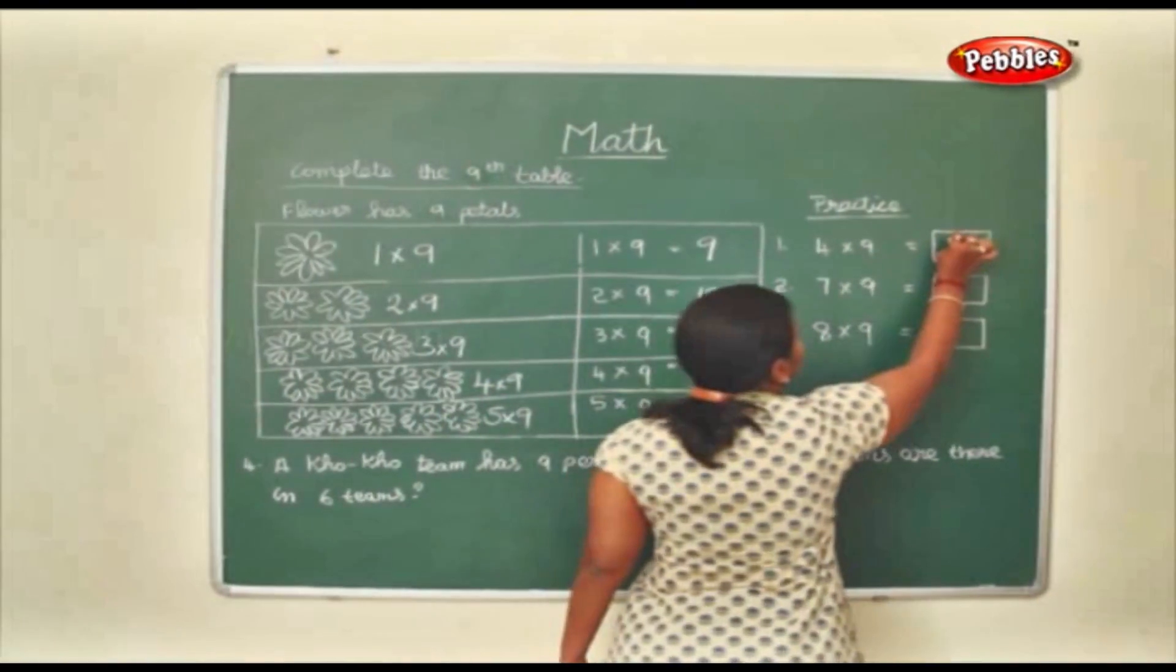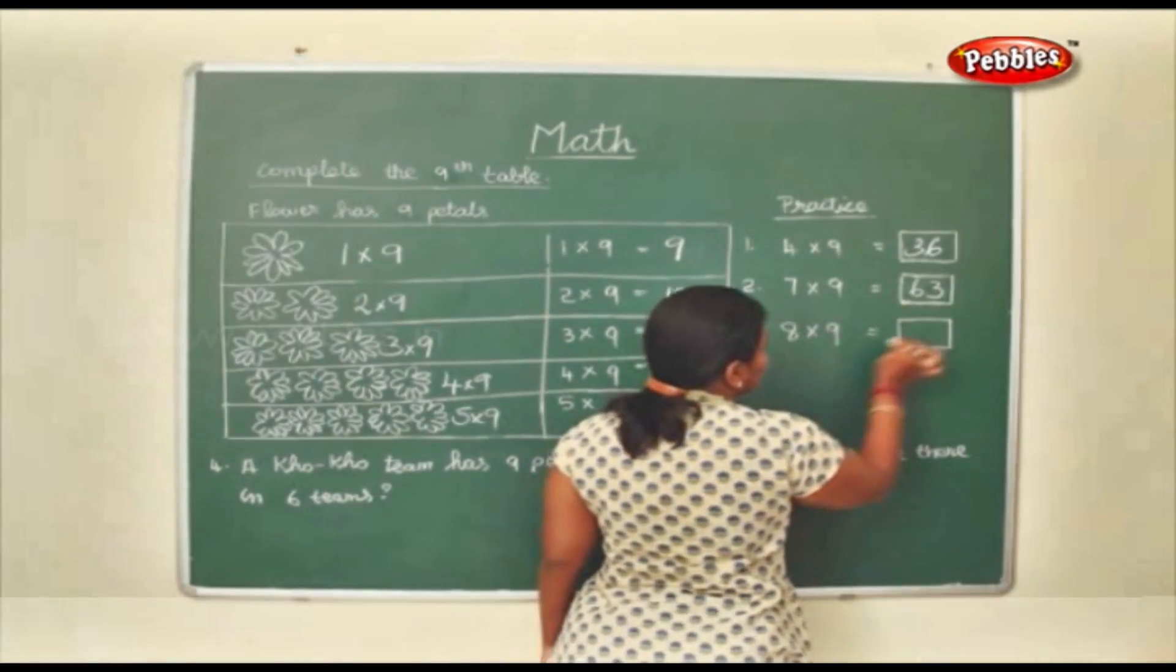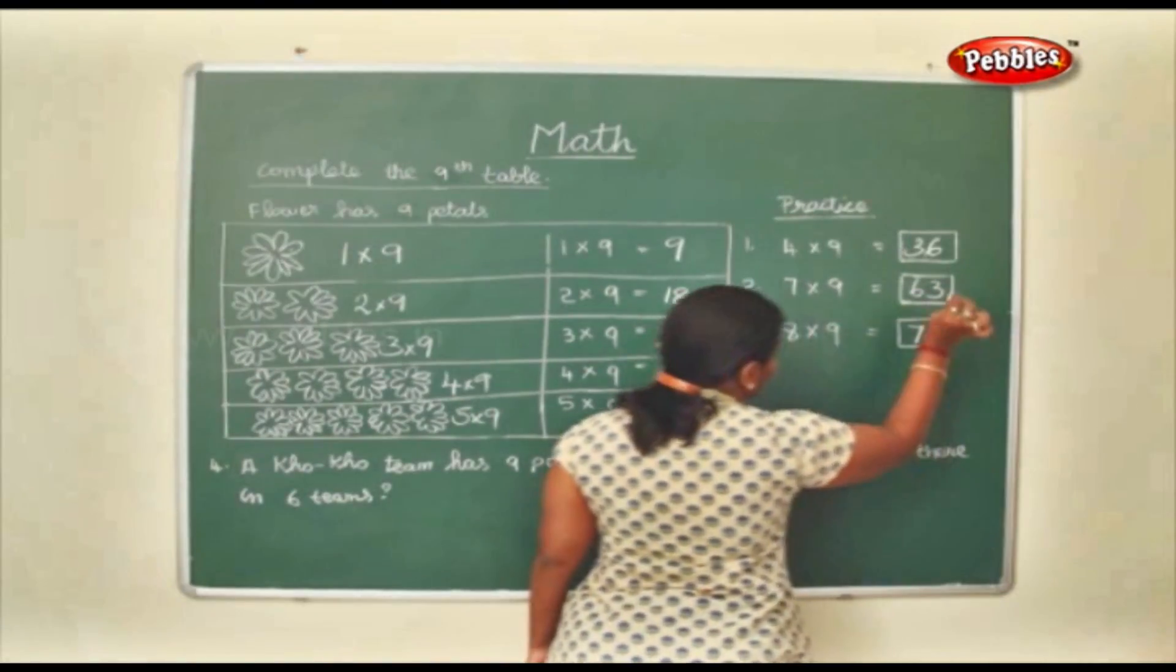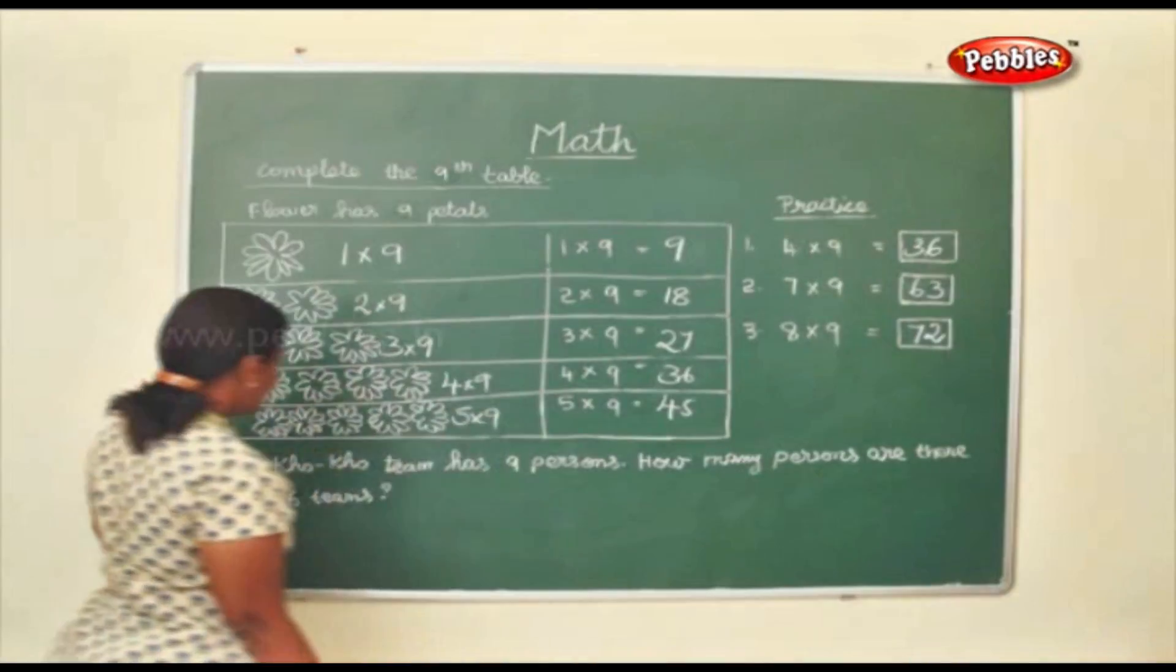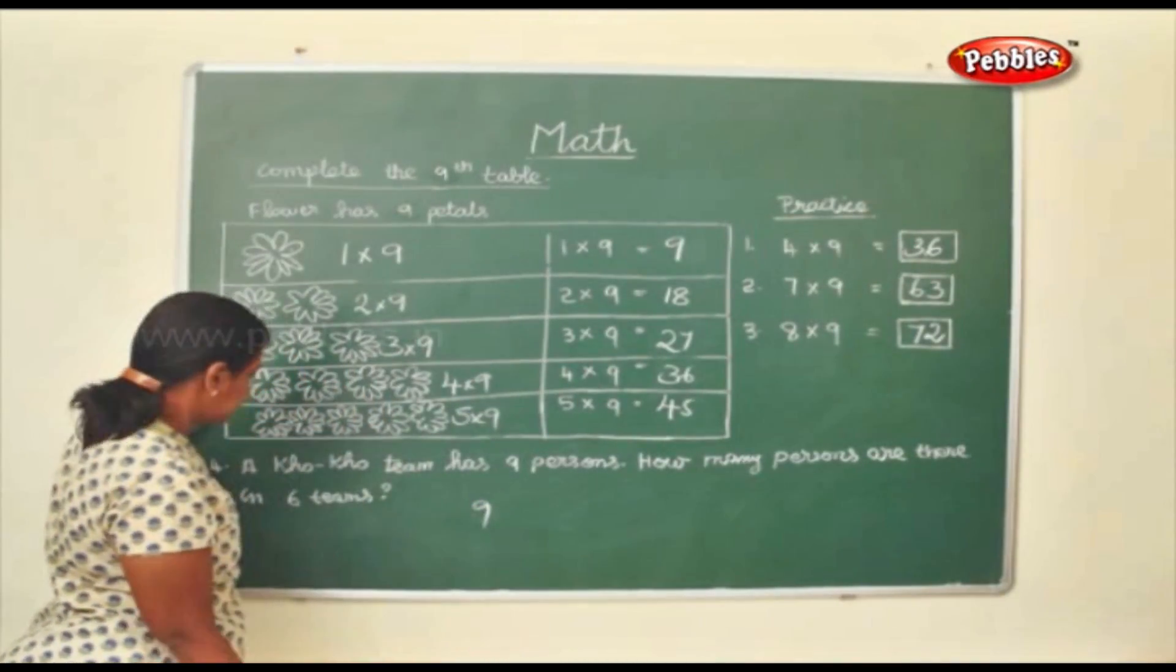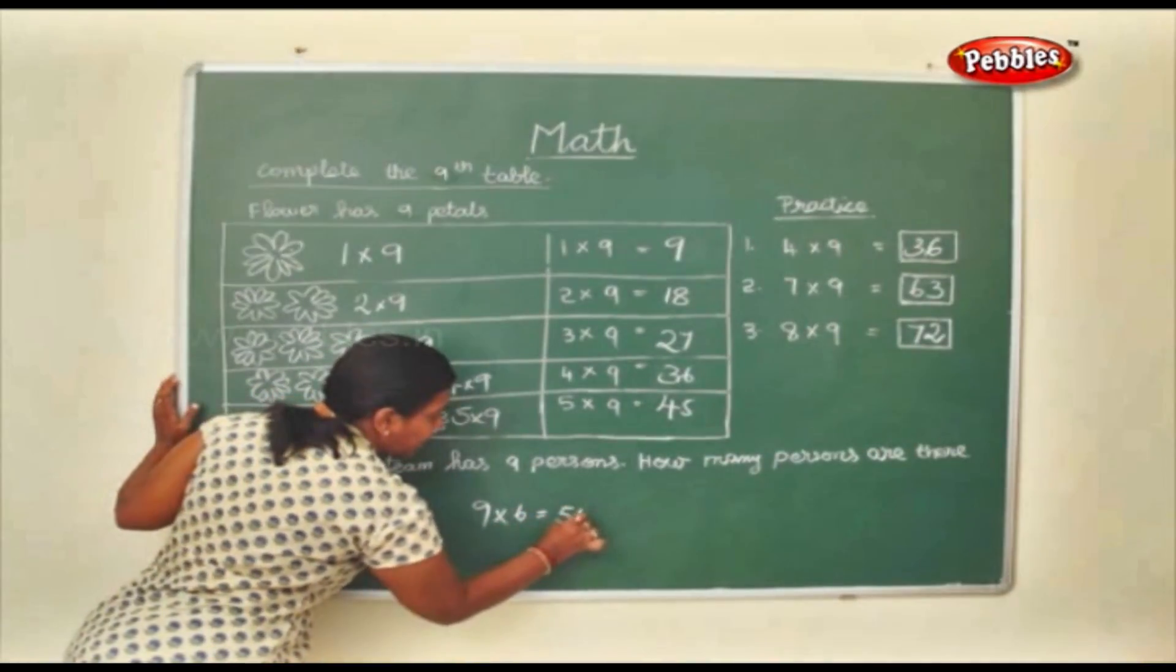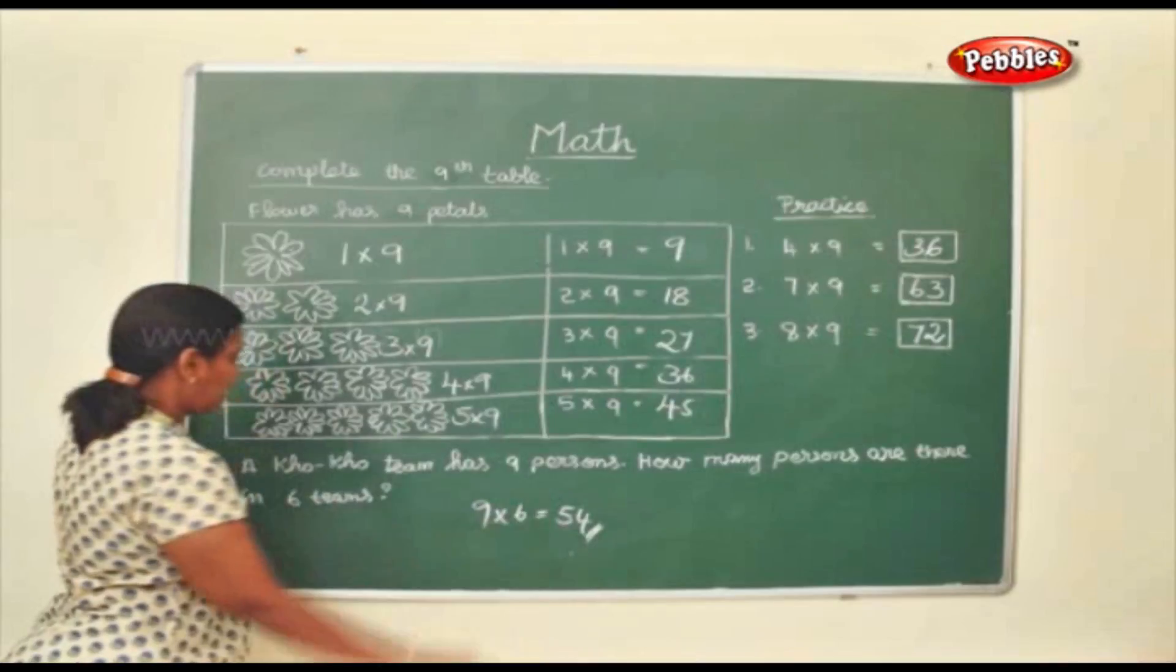Now let us practice as we did earlier. 4 9's are 36. 7 9's are 63. 8 9's are 72. Now a Coco team had 9 persons. How many persons are there in 6 teams? 9 6's are 54. So you will have 54.